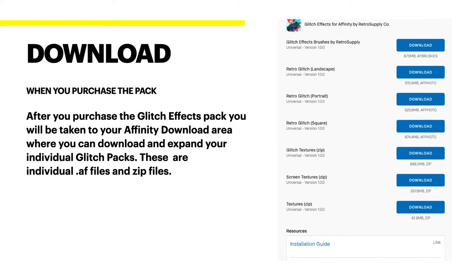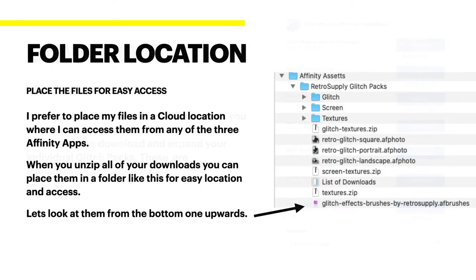If you've ever seen them — even for the younger people in old movies — a lot of these effects will be familiar if you're old enough to remember analog TVs. Find a folder location and place the files for easy access. I prefer to place my files in an iCloud location where I can access them from any of the three Affinity apps: Photo, Designer and Publisher. When you unzip all of your downloads, you can place them in a folder for easy location and access.